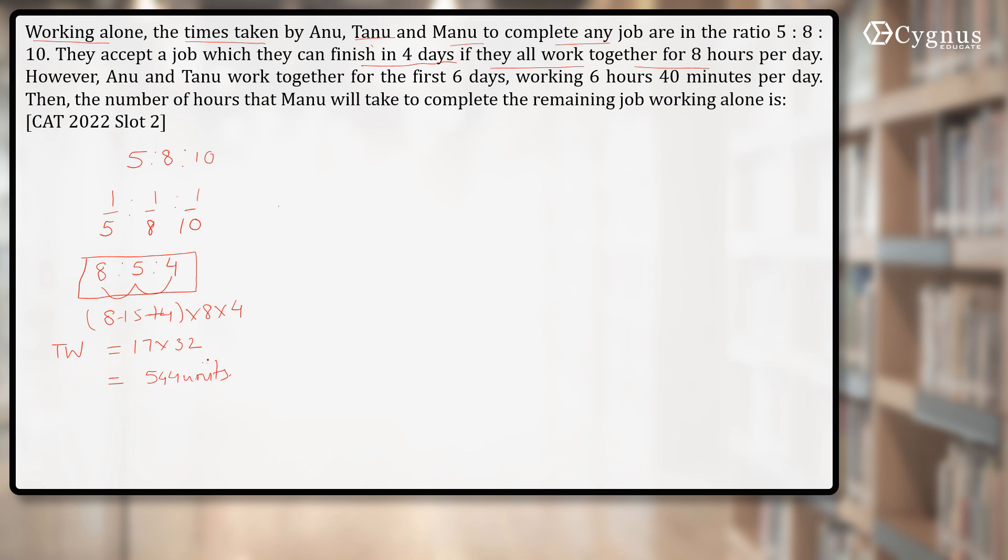However, Anu and Tanu work together for the first six days working 6 hours 40 minutes. One hour work of Anu is 8, one hour work of Tanu is 5, so their one hour work becomes 13.